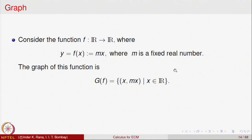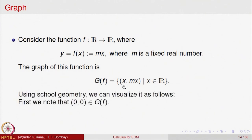Remember, every ordered pair x comma y was identified with a point on the plane with x-axis and y-axis as coordinates x comma y. Let us identify what is this set — the graph of the function f — as a set of points on the plane R². For x equal to 0, mx is equal to 0, so the point (0, 0) belongs to the graph. The graph of the function includes the origin.